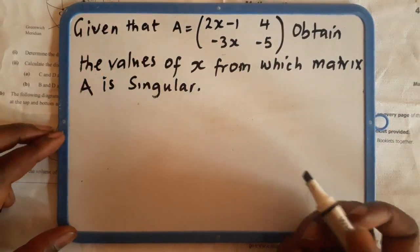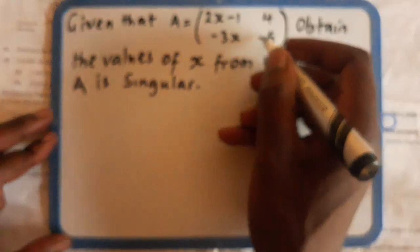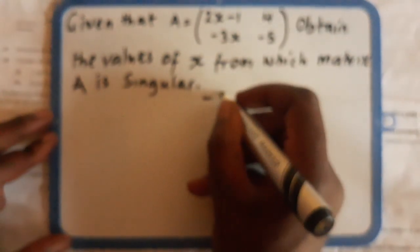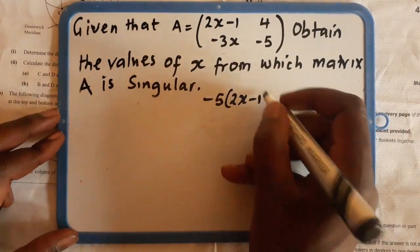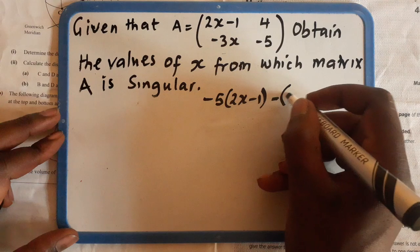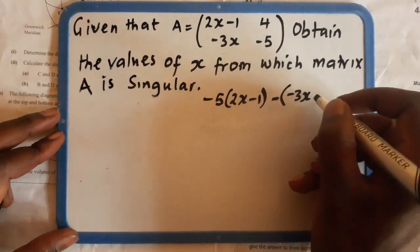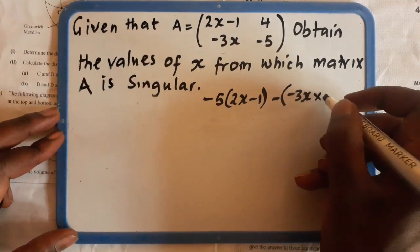So we have to solve this question as follows. We say negative 5 should be multiplied by 2X minus 1. This is minus negative 3X multiplied by 4.